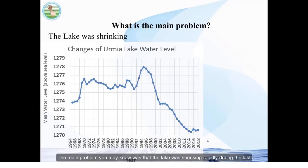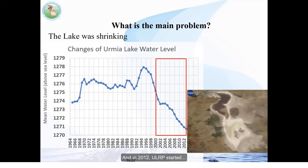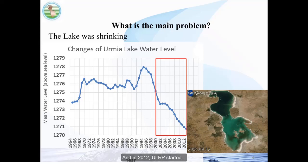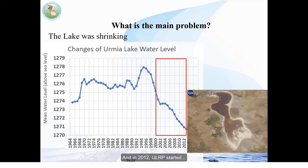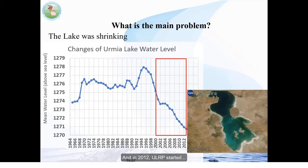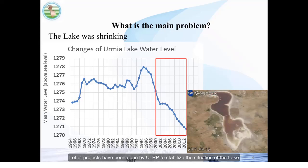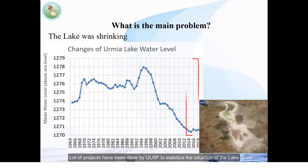The main problem, as you may know, was that the lake was shrinking rapidly. During the last 20 years, you can see a rapid shrinkage of water and decrease in the water level of the lake. Around 2012, the ULRP program started, and many projects have been undertaken to stabilize the situation of the lake.